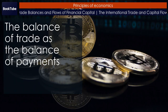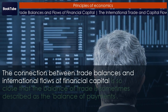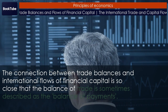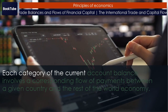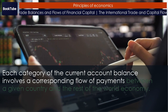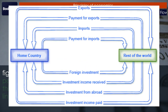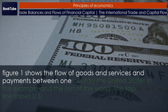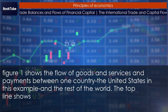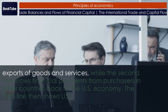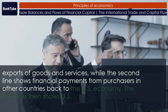The balance of trade as the balance of payments. The connection between trade balances and international flows of financial capital is so close that the balance of trade is sometimes described as the balance of payments. Each category of the current account balance involves a corresponding flow of payments between a given country and the rest of the world economy. Figure 1 shows the flow of goods and services and payments between one country — the United States in this example — and the rest of the world. The top line shows US exports of goods and services, while the second line shows financial payments from purchasers in other countries back to the US economy.